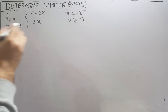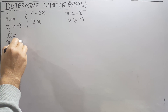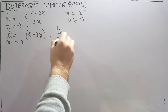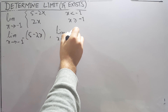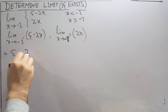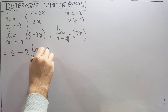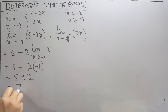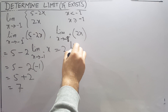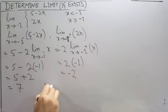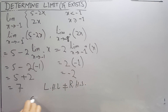For yet another similar problem, we find the left-hand limit using 5 - 2x: taking 2 out and applying the limit gives 5 - 2(-1) = 5 + 2 = 7. For the right-hand limit using 2x: taking 2 out and applying the limit gives 2 times -1 = -2. Since the left-hand limit (7) does not equal the right-hand limit (-2), the limit does not exist.